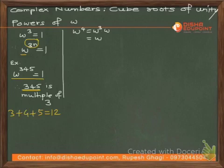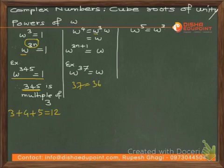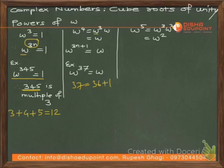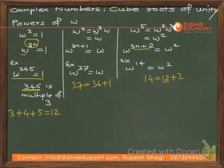ω^4 = ω³·ω = 1·ω = ω. In general, ω^(3n+1) = ω. For example, ω^37 = ω because 37 = 36 + 1. Similarly, ω^5 = ω³·ω² = ω², so ω^(3n+2) = ω². For example, ω^14 = ω² because 14 = 12 + 2, where 12 is divisible by 3.